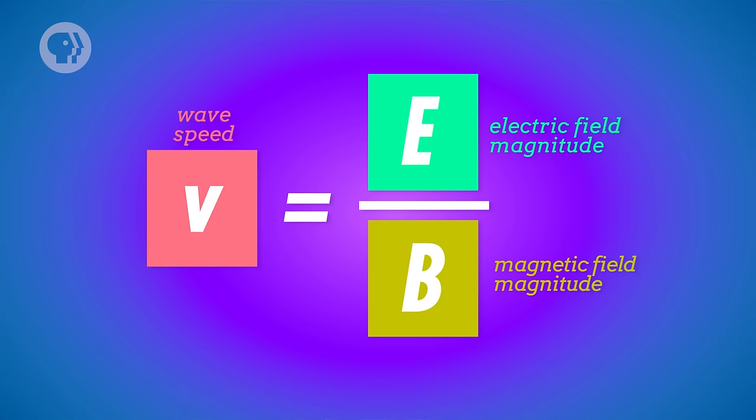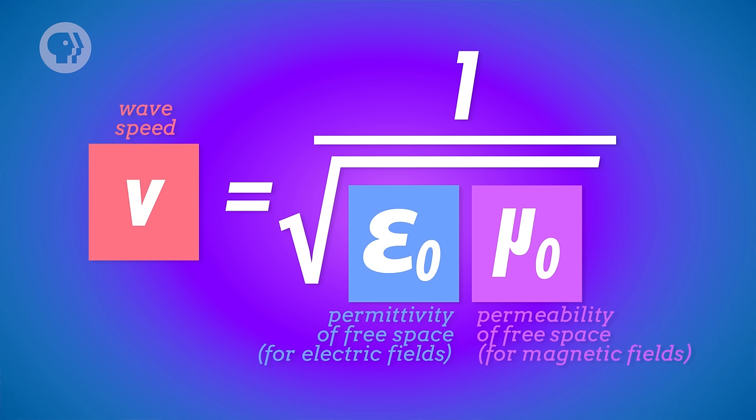These electromagnetic waves are a type of transverse wave, which means both fields — electric and magnetic — act in directions perpendicular to the direction in which the wave is moving. Maxwell calculated that the speed of each wave is equal to the electric field's magnitude divided by the magnetic field's magnitude. This simplifies down to an equation with two constants: the permittivity of free space for electric fields, epsilon nought, and the permittivity of free space for magnetic fields, mu nought. This speed works out to be 3.00 times 10 to the eighth meters per second — written as small c — the speed of every electromagnetic wave in a vacuum. You may know it better as the speed of light, because light is an electromagnetic wave.